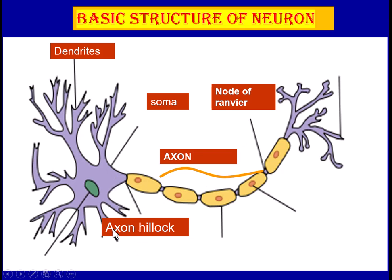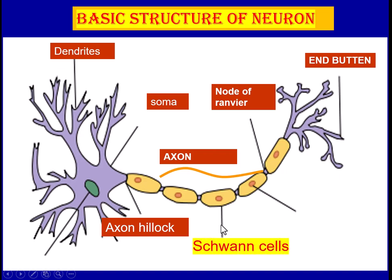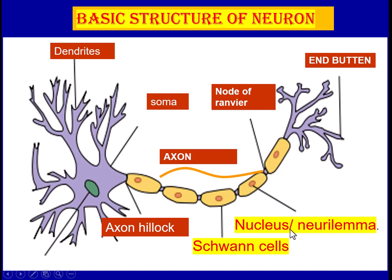Another structure in the neuron is the axon hillock, an anatomical structure from which the axon arises, and we will discuss its functions in the next slide. The terminal portion of the neuron is called the end button, through which it makes a synapse at the neuromuscular junction with the nerve fiber or with other neurons. This thread-like structure is covered by Schwann cells, which contain a nucleus also called the neurilemma.